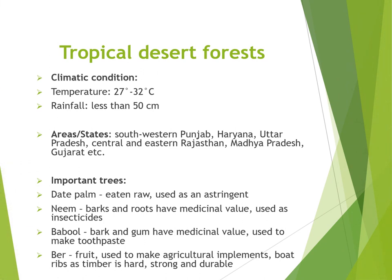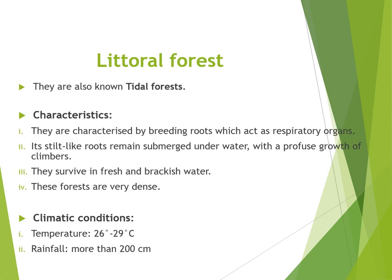Climatic conditions for desert forest require a temperature of 27 to 32 degrees Celsius and rainfall of less than 50 cm per annum. These forests are found in Southwestern Punjab, Haryana, Uttar Pradesh, Central and Eastern Rajasthan, Madhya Pradesh, Gujarat, etc. Important trees include date palm, which can be eaten raw and used as an astringent; neem, whose bark and roots have medicinal value and is used as an insecticide; babool, whose bark and gum have medicinal value and is used to make toothpaste; and ber, a fruit tree whose wood is used to make agricultural implements, and whose timber is hard, strong, and durable.